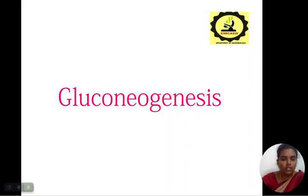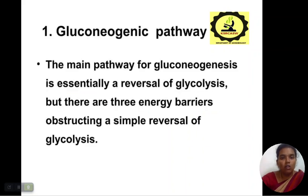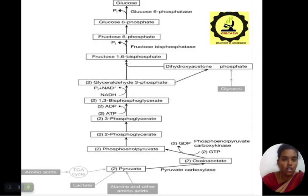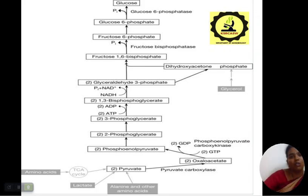Next, we will see about gluconeogenesis. The gluconeogenic pathway is essentially a reversal of glycolysis, but there are three energy barriers obstructing a simple reversal. The pathway goes from pyruvate to phosphoenolpyruvate, then through 2-phosphoglycerate, 3-phosphoglycerate, 1,3-bisphosphoglycerate, glyceraldehyde 3-phosphate, fructose 1,6-bisphosphate, fructose 6-phosphate, glucose 6-phosphate.